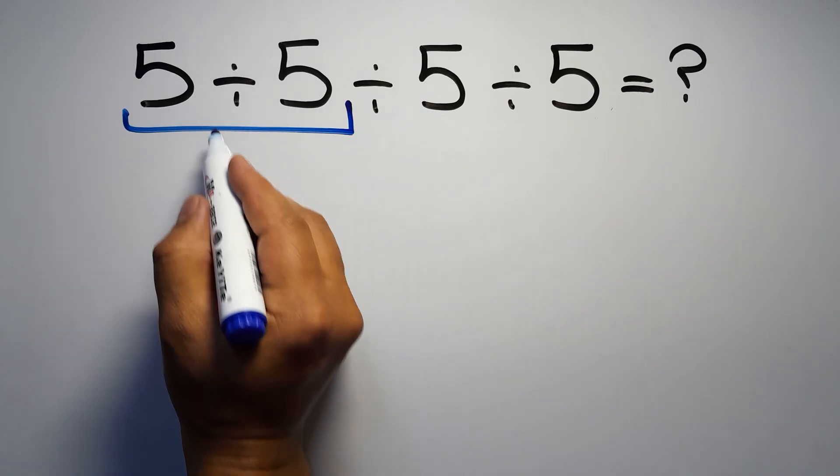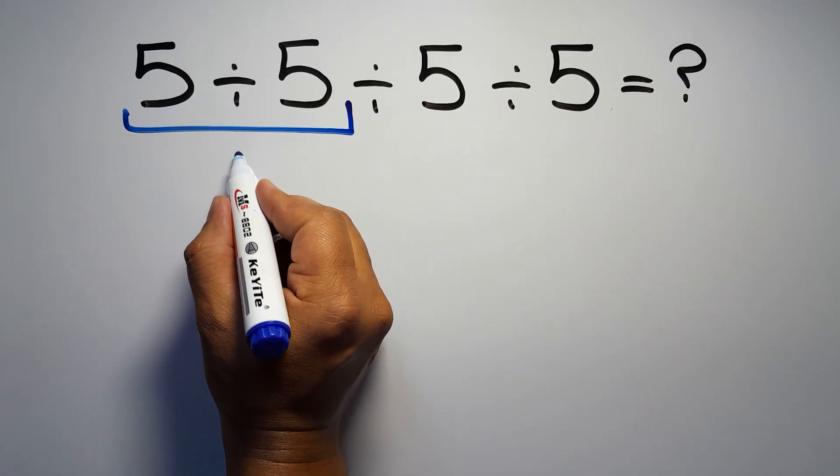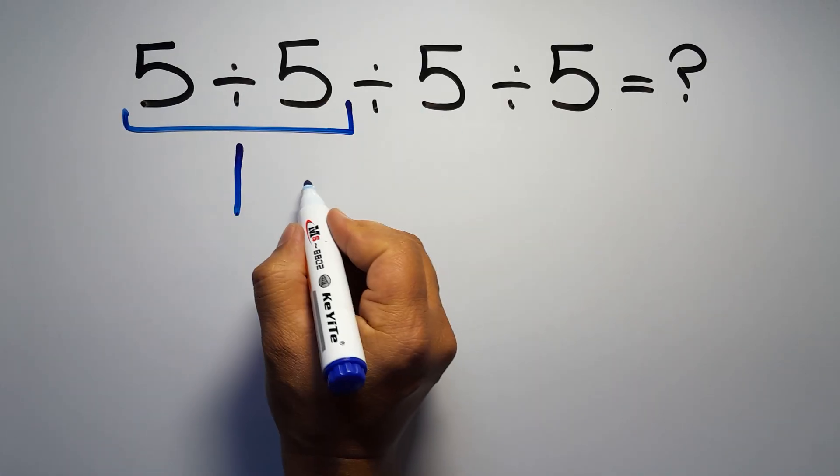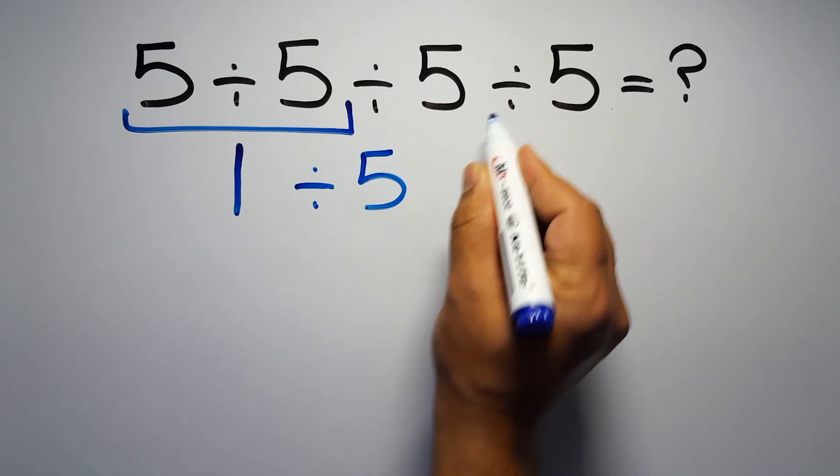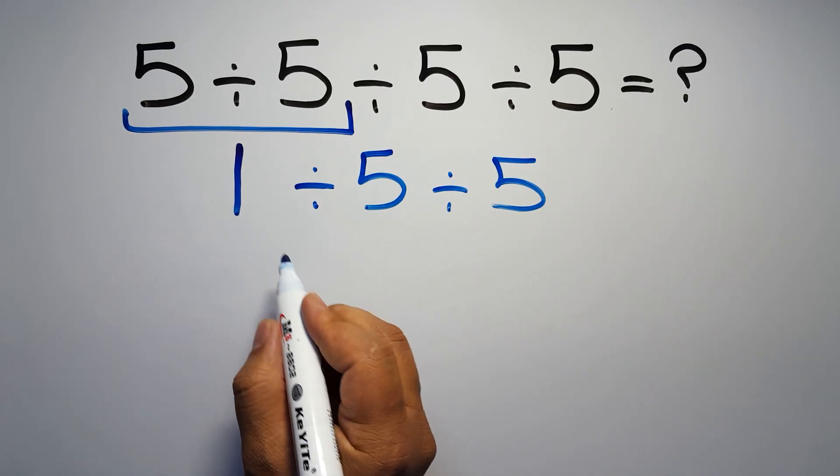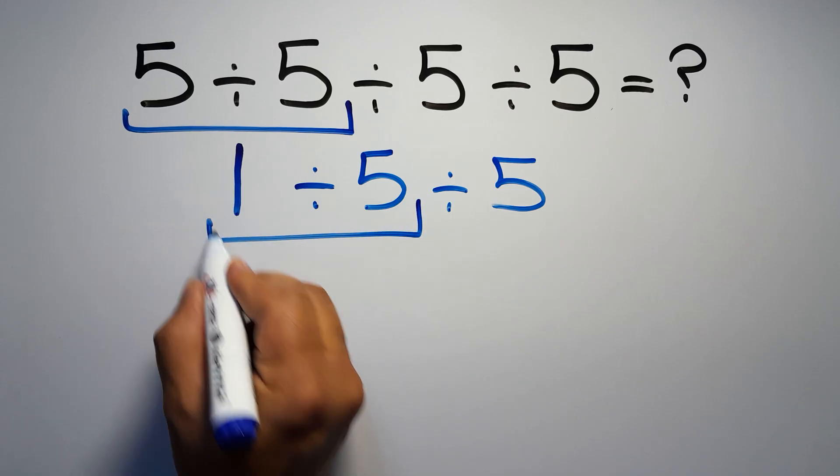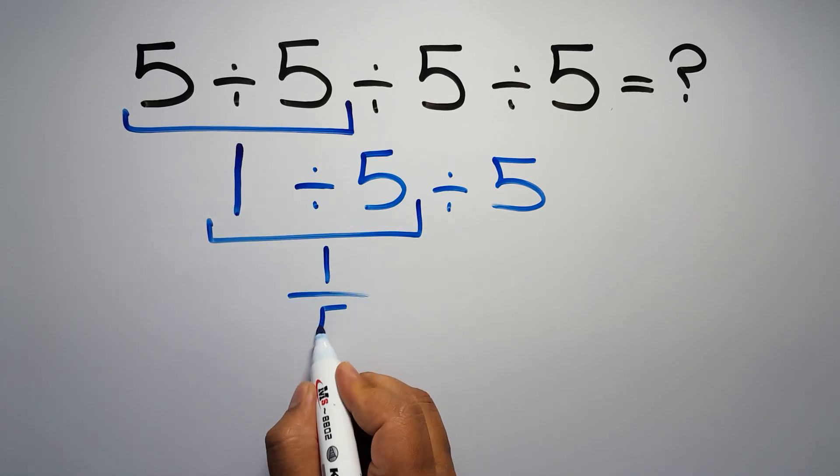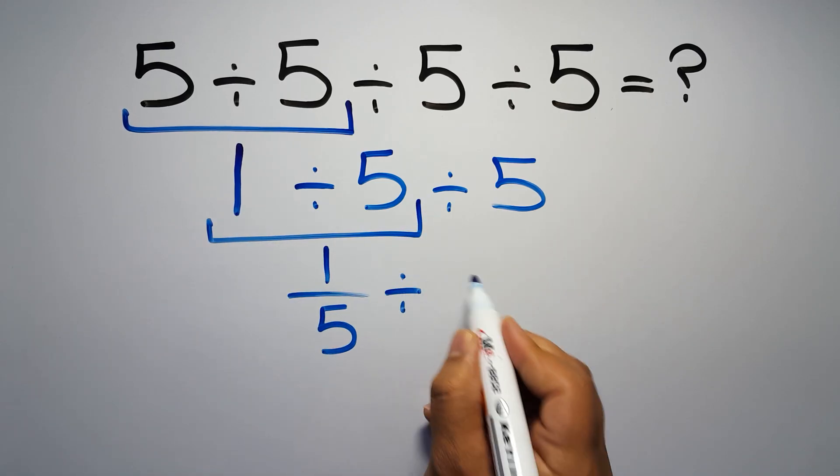So first this division, 5 divided by 5 is just 1. So 1 divided by 5 and again divided by 5. Now we have to do this division. 1 divided by 5 can be written as 1 over 5, then divided by 5.